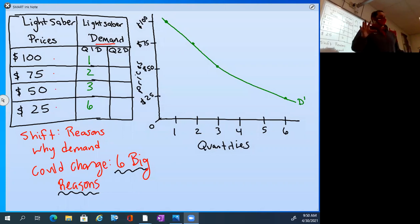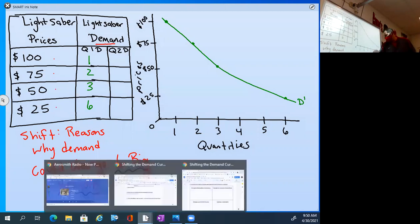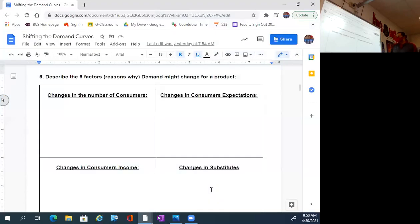Today, we're going to look at the six reasons. There are more, but there are six big reasons why demand would shift for a product. Why would the curve move, okay? And so that's what we're going to look at today. Let's take a look. Now go to your document from yesterday. We're going to quickly go through these. These are super simple, okay? Super simple. Six factors or reasons why demand might change for a product.